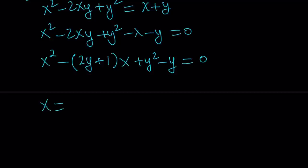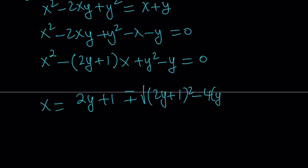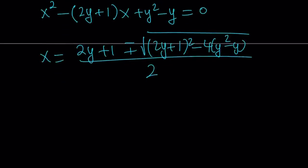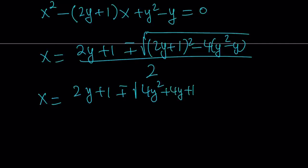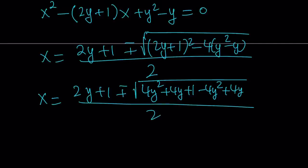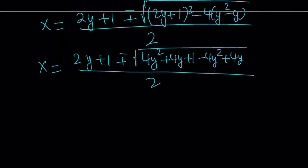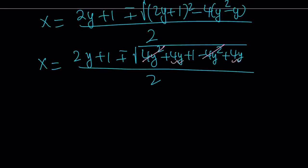The quadratic formula gives us negative b plus or minus the square root of b squared, which is 2y plus 1 squared, minus 4ac, which is 4 times y squared minus y, all divided by 2a, which is 2. Let's simplify what's under the radical: we get 4y squared plus 4y plus 1 minus 4y squared plus 4y. Inside the radical, the 4y squared terms cancel, leaving 8y plus 1.